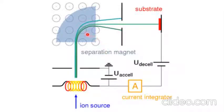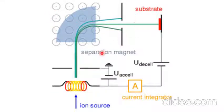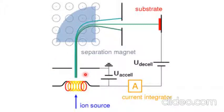Let's explain the ion implantation with a schematic diagram. In ion implantation equipment, ions are created by the ion source. These ions are then accelerated by the accelerator, which is placed near the ion source inside the ion implantation system. When the ions are accelerated by the accelerator, these accelerated ions are transported onto the magnetic separator.